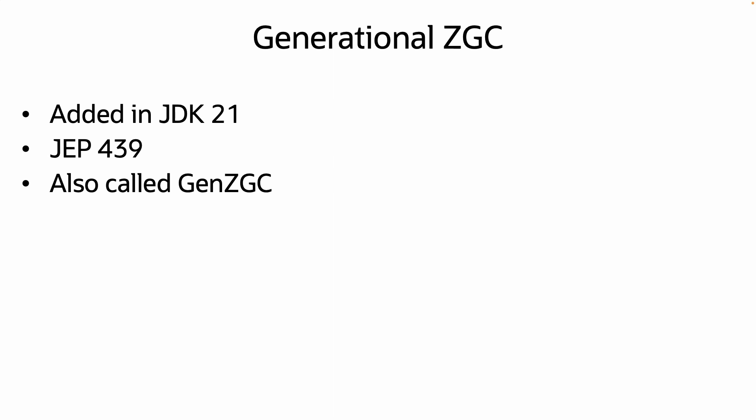Hey Java developers, Generational GDC was added in Java 21. Let's take a look at what this feature means for GDC. It was added with the release of JDK 21, specified with JEP 439. Frequently, Generational GDC is shortened to Gen GDC.